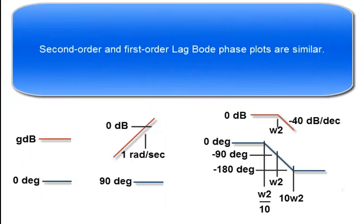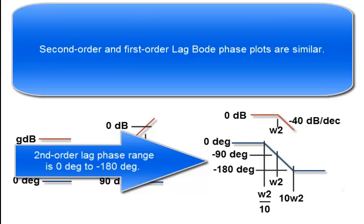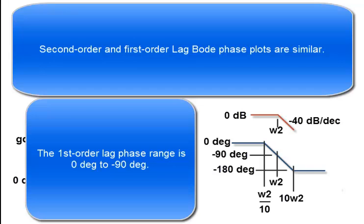Second order and first order lag Bode phase plots are similar. The second order lag phase range is 0 to negative 180 degrees, and the first order lag phase is 0 to negative 90 degrees.